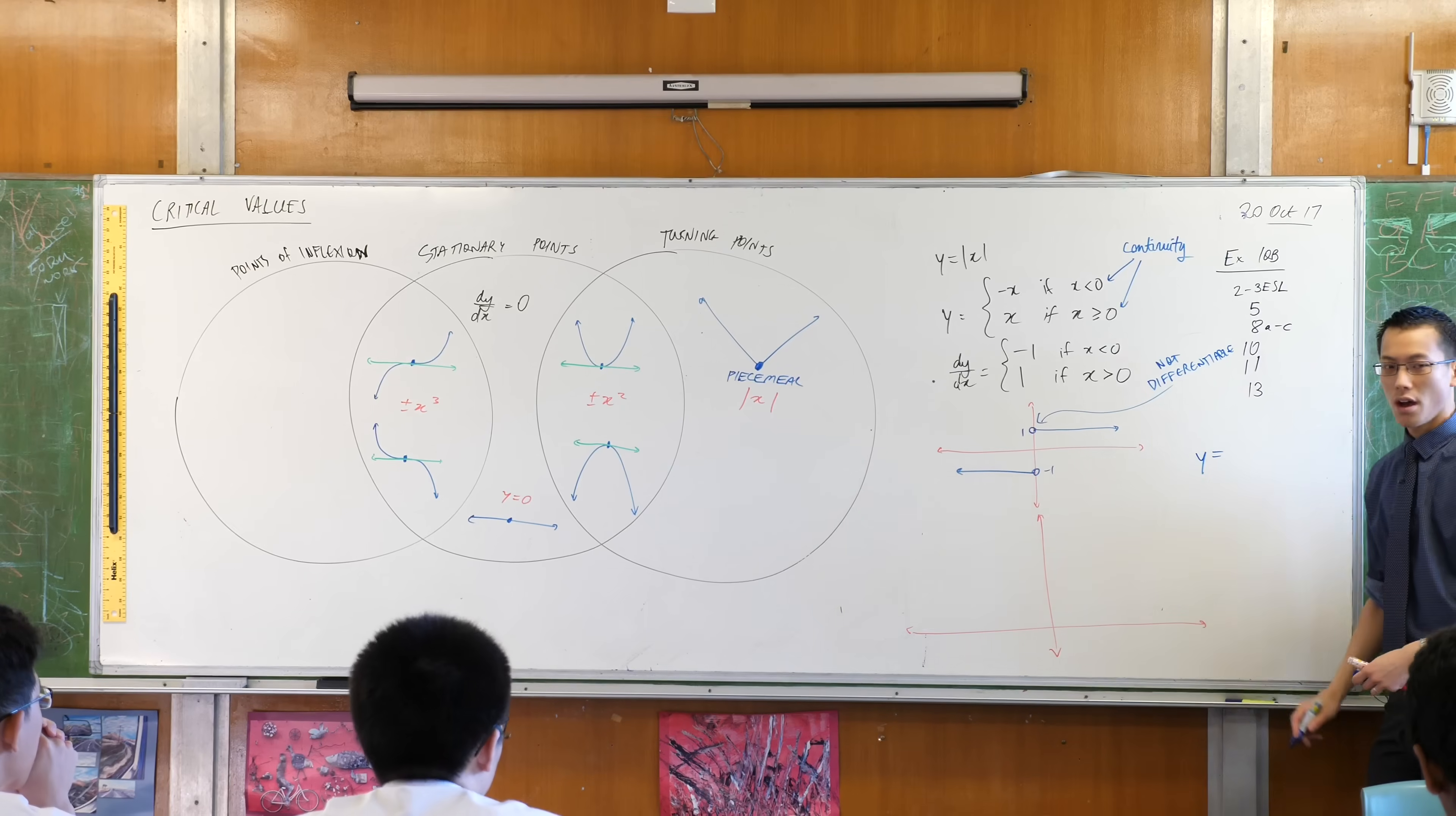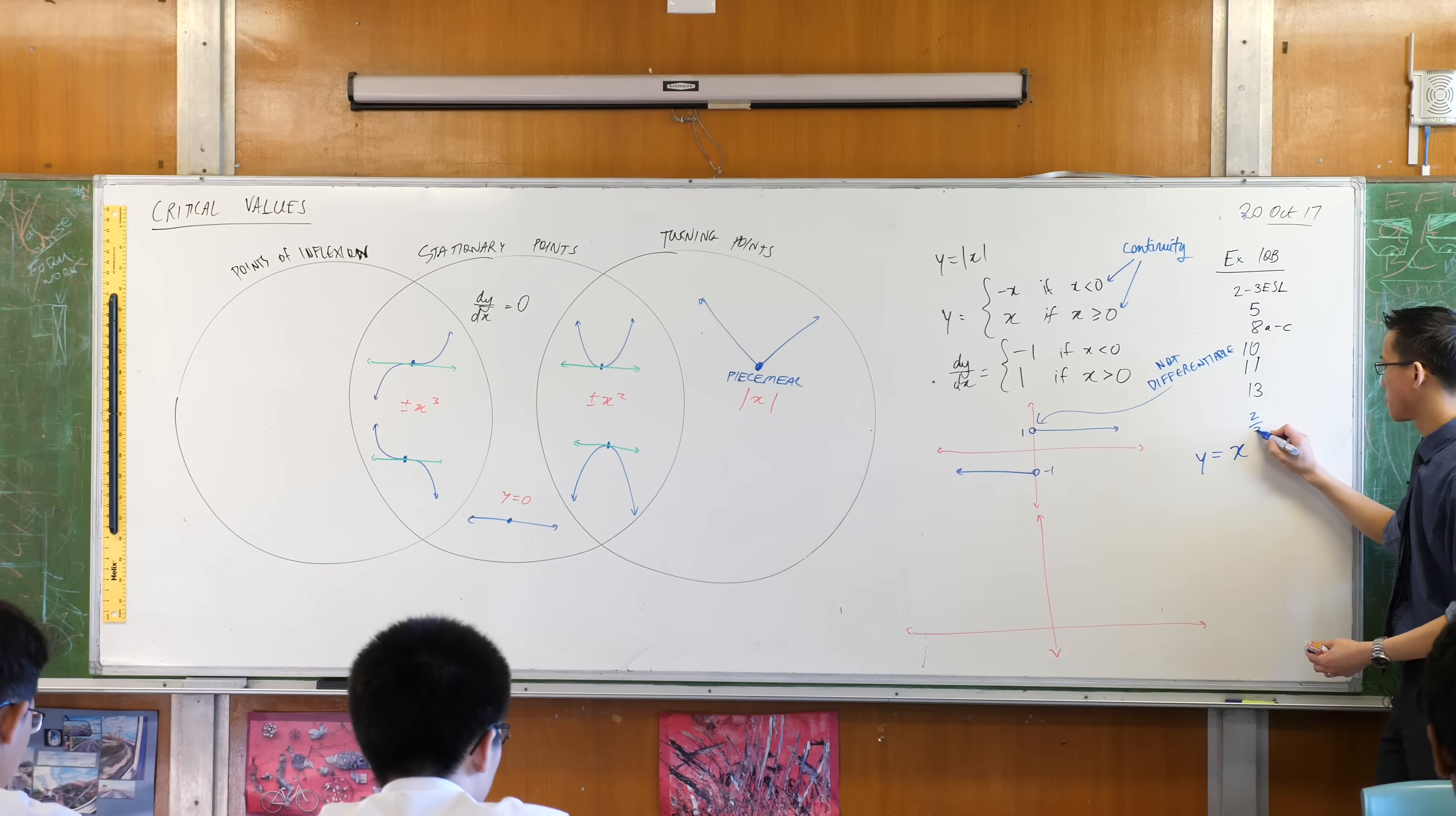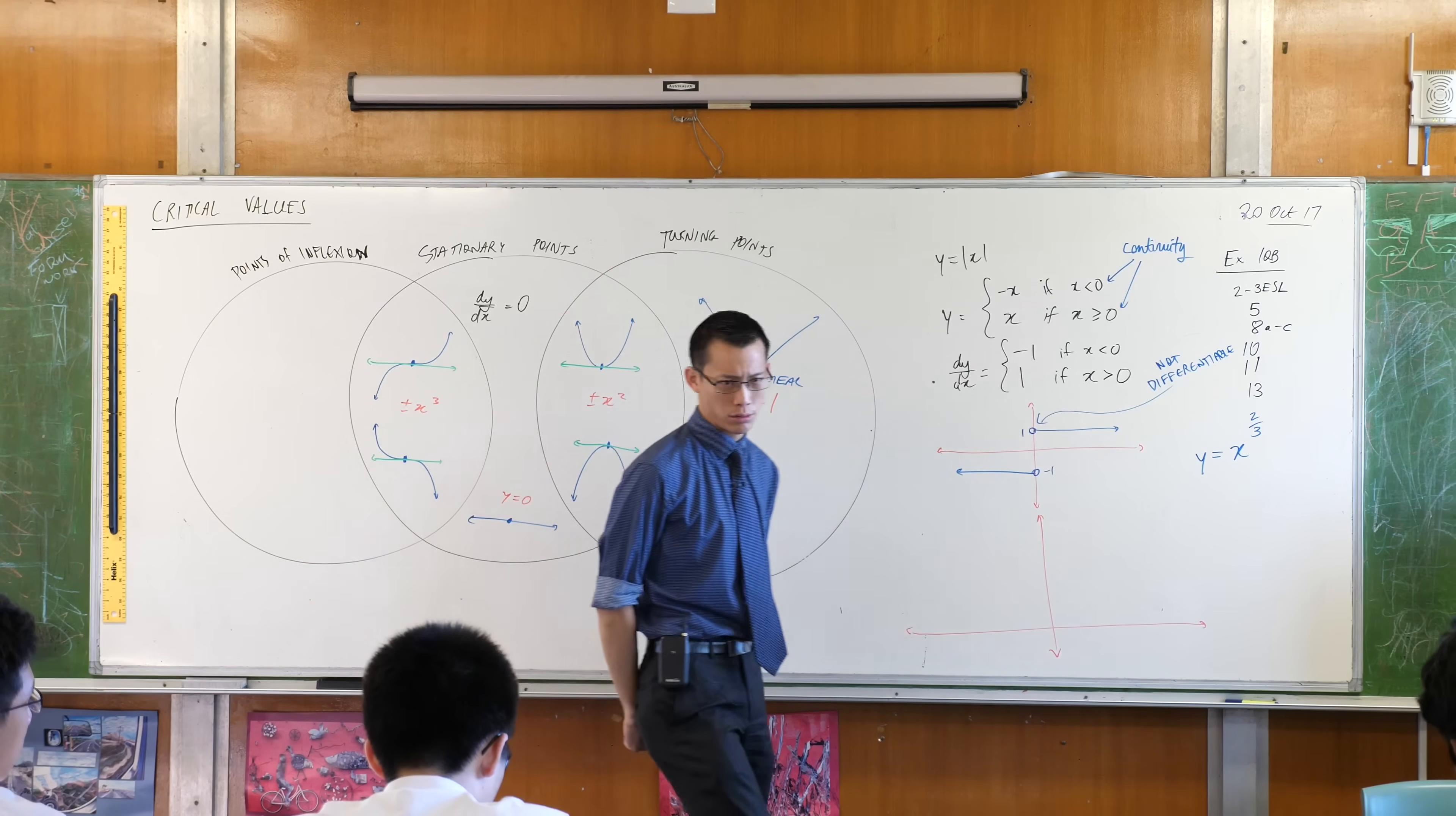This is the graph we're going to consider. y equals, it's very simple, x to the power of two-thirds. x to the power of two-thirds. So, if we think about this guy, what does it look like?